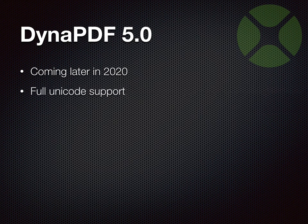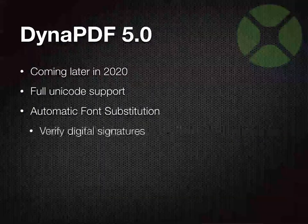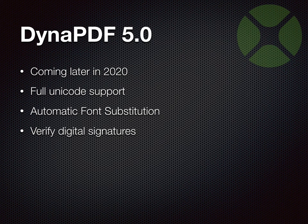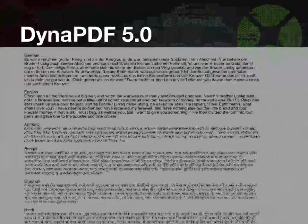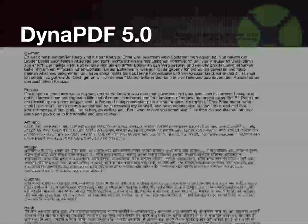With DynaPDF 5's full Unicode support, there are some languages where you have to pre-process text before putting it on a PDF page. Some characters need to be joined together and converted to other characters for correct display. We can get a new function to verify digital signatures, so if you have a signed PDF — which you can create with DynaPDF — you can later also verify whether the signature is still valid. Here's an example showing international text put on a PDF page by DynaPDF, including more exotic languages like Bengali and Kyrgyz, which can now be correctly rendered.